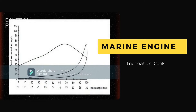An indicator diagram traces out the pressure and volume relationships in the cylinder of an engine on rectangular axes, and it can be used to estimate the work done by the engine per cycle. The indicator must move a vertical distance proportional to the pressure in the cylinder, and the drum, as it rotates, provides a horizontal motion proportional to the change in cylinder volume.